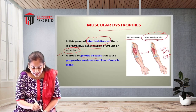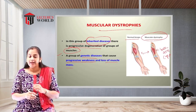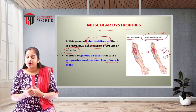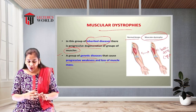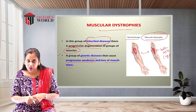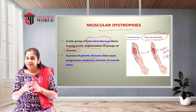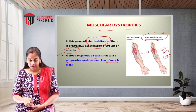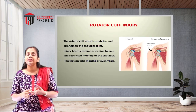Muscular dystrophy is a group of genetic diseases that cause progressive weakness and loss of muscle mass. The muscles become very weak and very shrunken. It is mostly seen in genetic as well as hereditary cases.